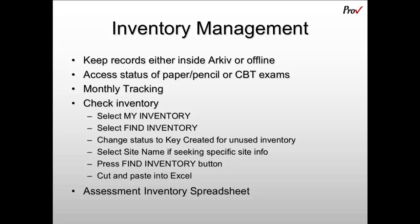To get this information, you will go into archive and select My Inventory, then select the Find Inventory menu option. You will then change the status in the search window to Key Created, which will allow you to search for unused inventory. You can then select the site name if you are looking for a particular assessment center or subaccount, then press Find Inventory. You can cut and paste this information into Excel, or use the Assessment Inventory Spreadsheet menu option to get all of your inventory.